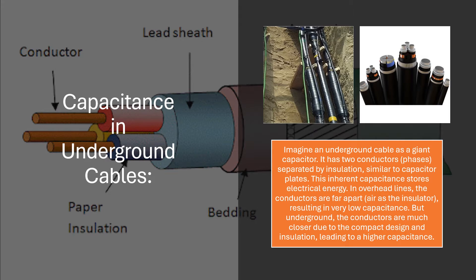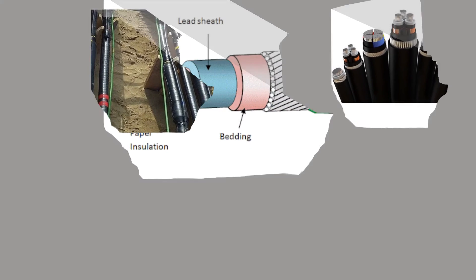In overhead lines, the conductors are far apart with air as the insulator, resulting in very low capacitance. But underground, the conductors are much closer due to the compact design and insulation, leading to a higher capacitance.